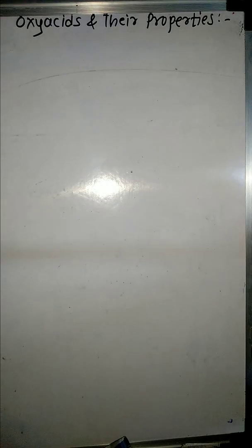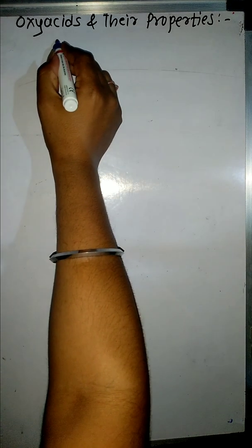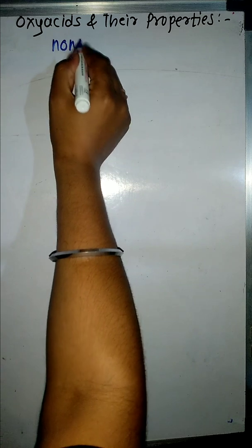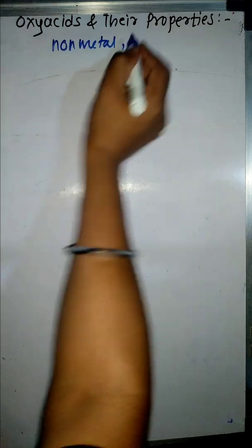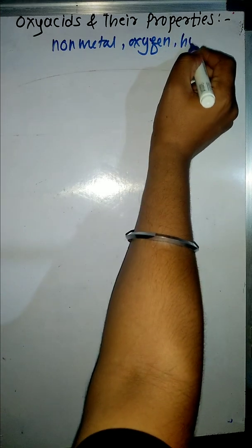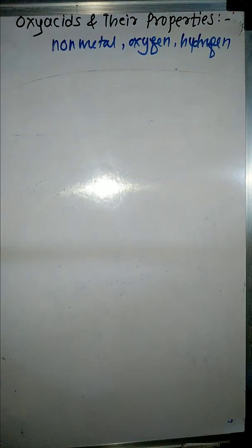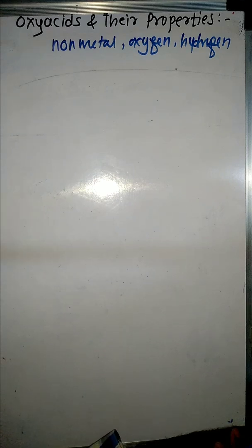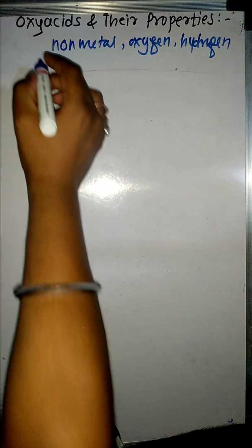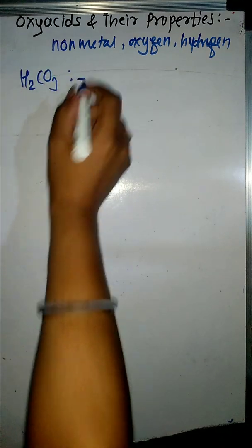Hello students, today our topic is oxy acids and their properties. So what are oxy acids? The acids which contain non-metal, oxygen, and hydrogen are called oxy acids. For example, HCl is NOT an oxy acid because it does not contain oxygen.